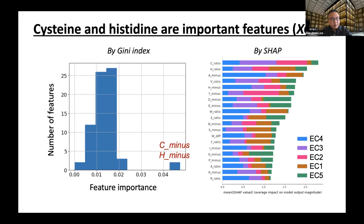Based on the better-performing XGBoost model, important features were identified using two attribution methods: one by Gini index and the other by SHAP analysis, based on the game-theoretic Shapley values. Interestingly, cysteine and histidine are the two most important features, where the 'minus' metric refers to the difference in cysteine fraction between virus and human proteins, and the 'ratio' refers to the ratio of cysteine or histidine fractions between virus and human proteins.